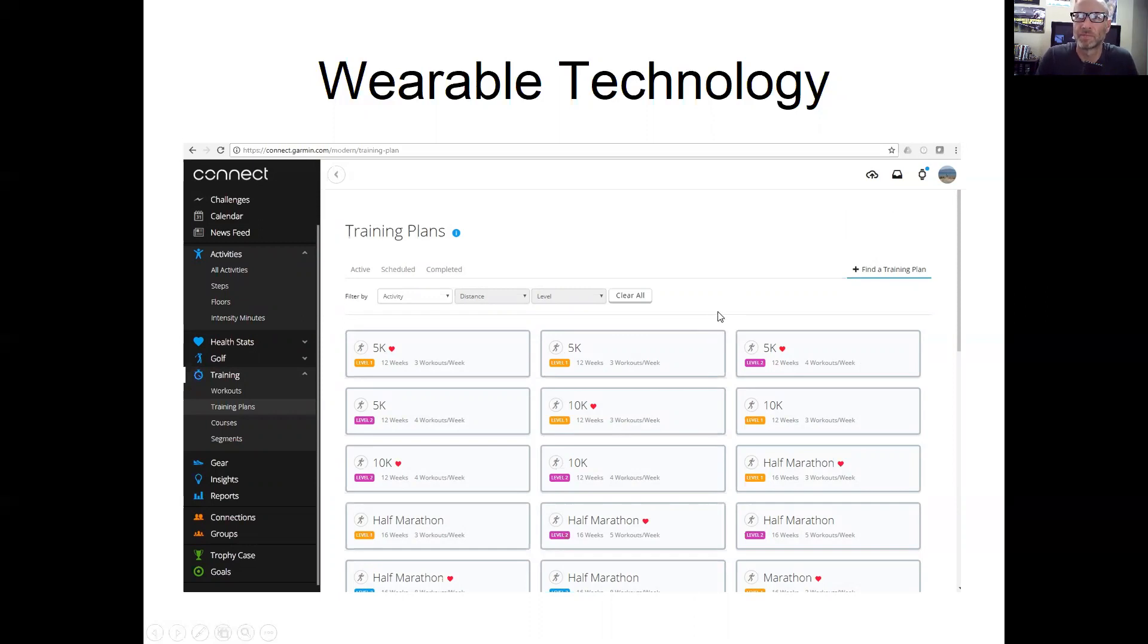You can also tailor a training program or use these devices to create a training program. I'm not selling any of this, but it is pretty neat to see these types of things develop in the wearable technology world. There's all different - you can actually, in some programs, you can set a target goal, and then based upon the training that you're doing, the software will build a training program specific to trying to achieve that target goal for you. So these are 5K training programs, 10K, half marathon, marathon training programs.